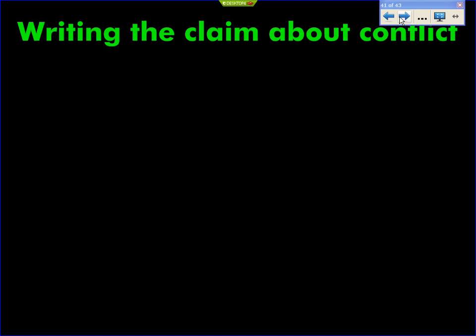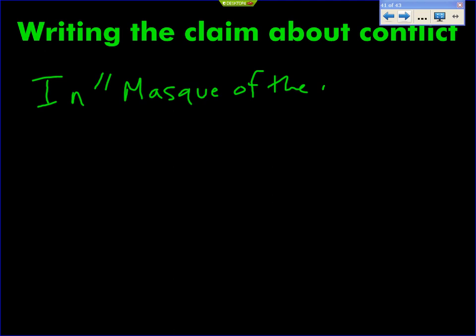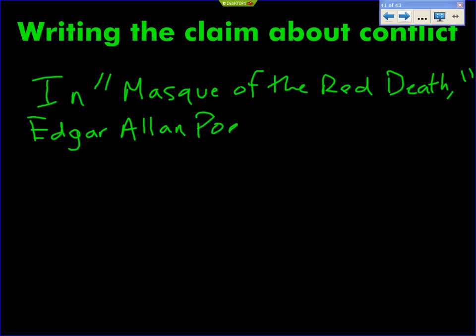How would we begin this claim sentence? Do you remember how we began those sentences yesterday? Just begin it for me. In the Mask of the Red Death — what's next? Do you remember the author's name? Edgar Allan Poe. Okay, thank you. We've got the beginning of the claim statement: 'In the Mask of the Red Death, Edgar Allan Poe...'